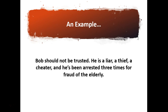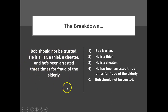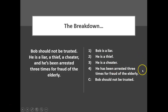Bob should not be trusted. He's a liar, a thief, a cheater, and he's been arrested three times for fraud of the elderly. Here's how it breaks down. The conclusion is: Bob should not be trusted. But notice, all of this is one sentence, yet you're making four different claims packed into the same sentence. Those need to be broken down. In complete sentences for each premise: one, Bob's a liar; two, he's a thief; three, he's a cheater; four, he's been arrested three times for fraud of the elderly. Four premises and a conclusion.